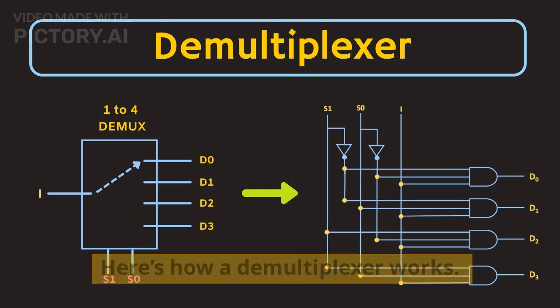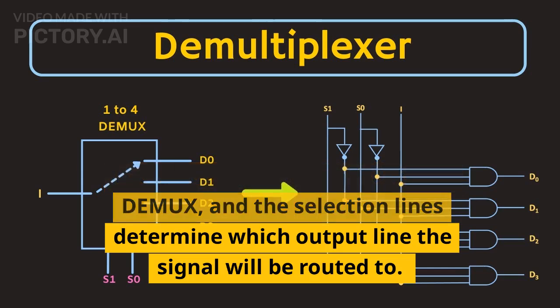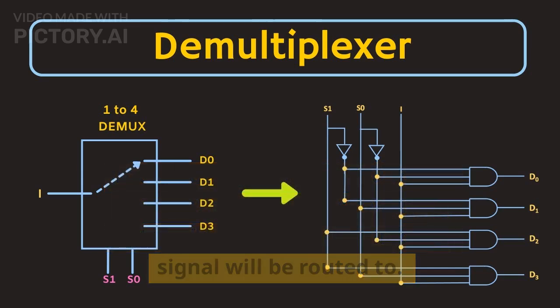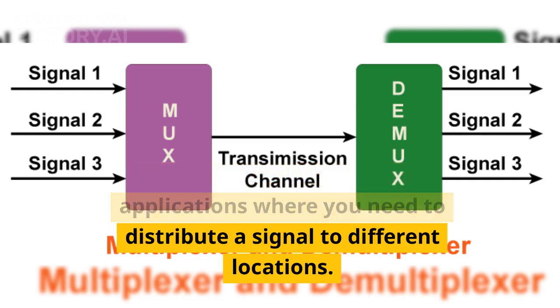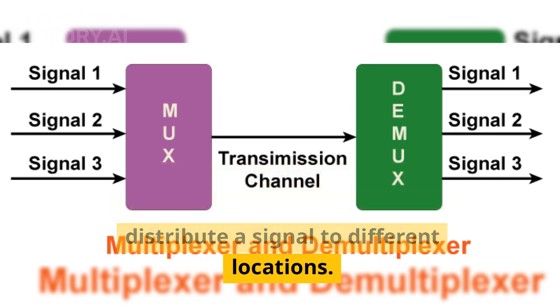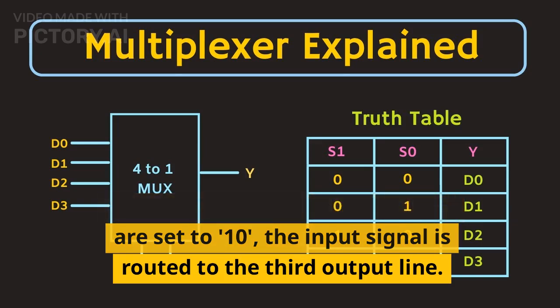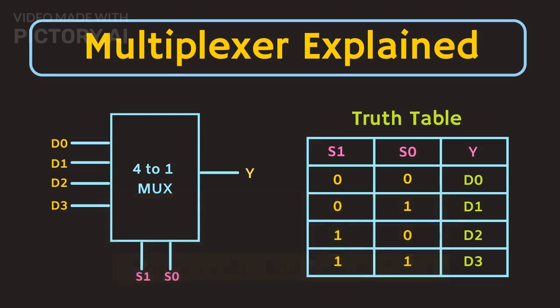Here's how a demultiplexer works. The input signal is applied to the DEMUX, and the selection lines determine which output line the signal will be routed to. This is particularly useful in applications where you need to distribute a signal to different locations. For example, if the selection lines are set to 1,0, the input signal is routed to the third output line.